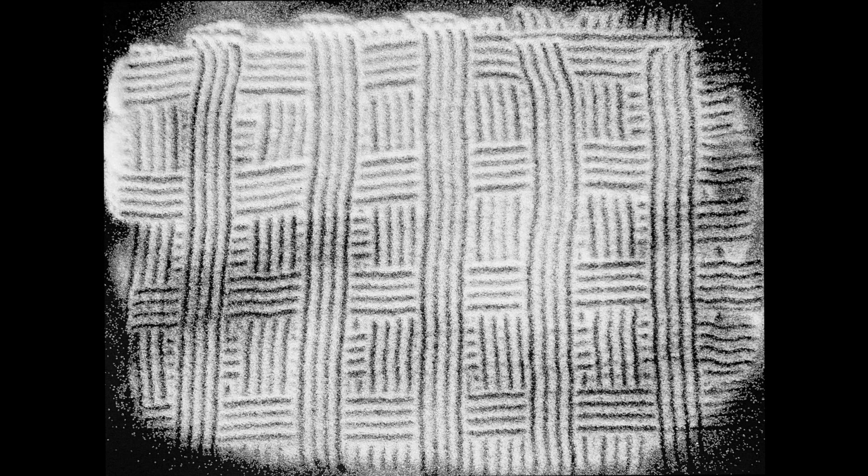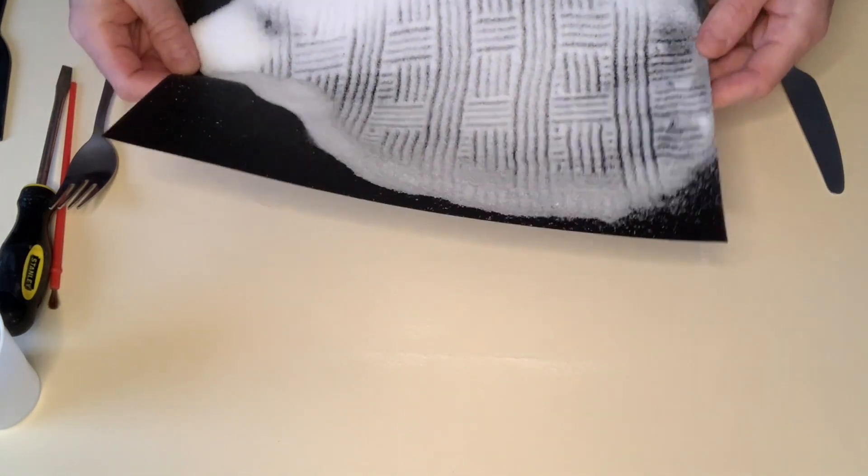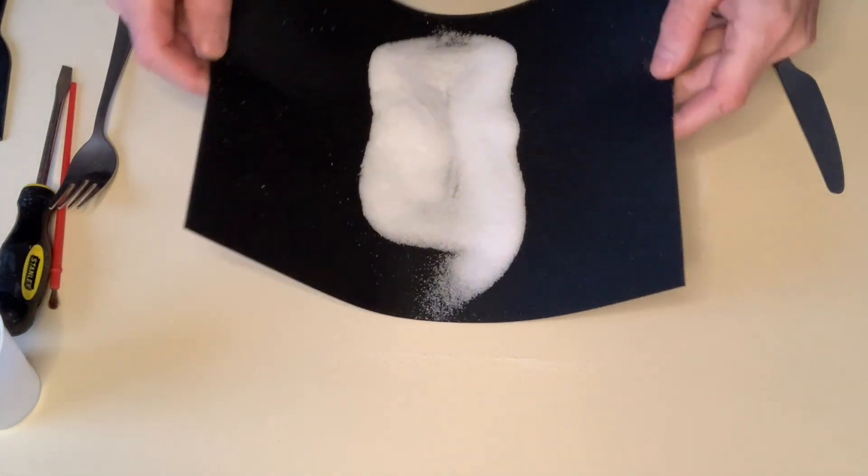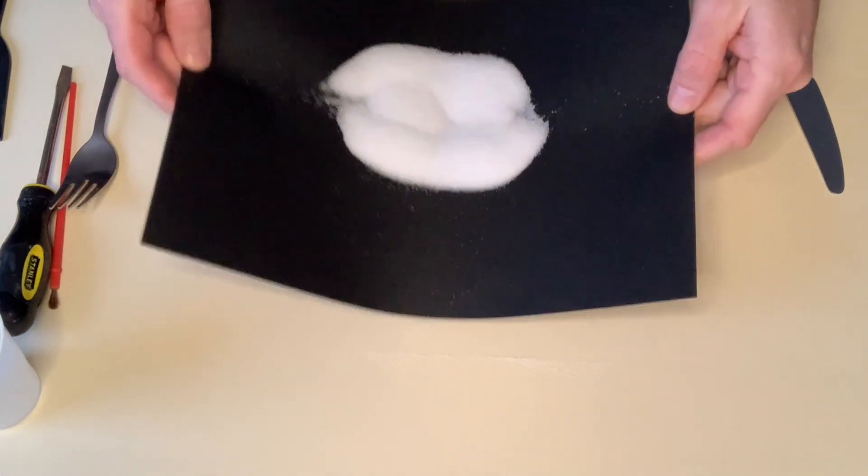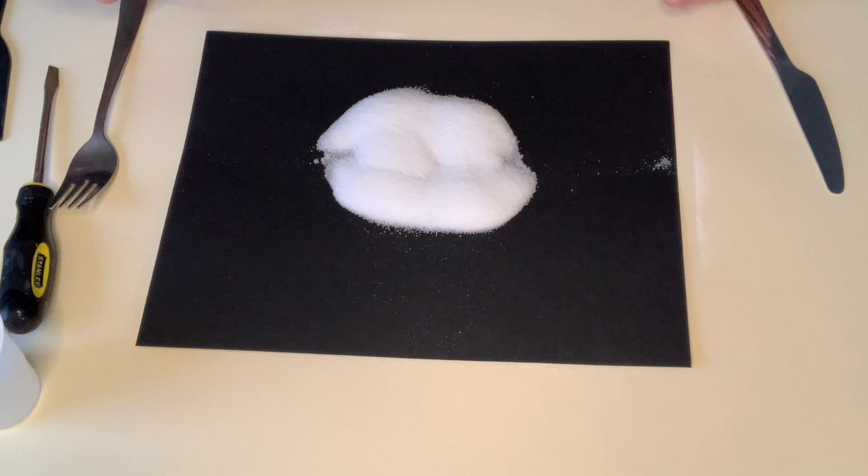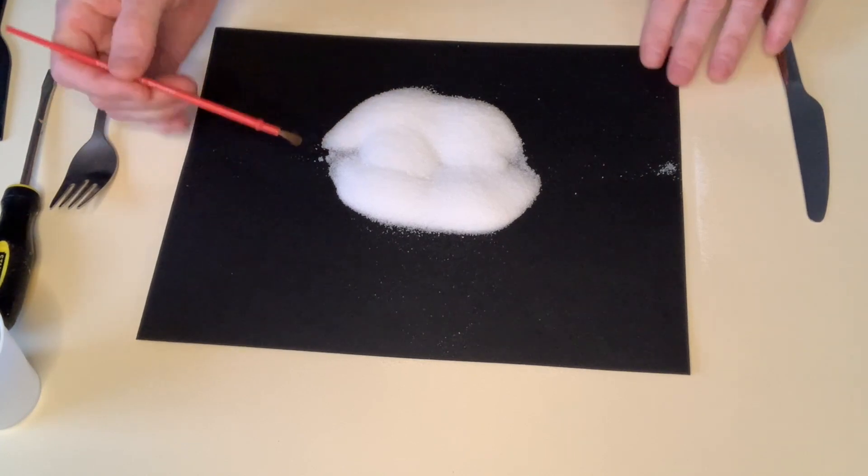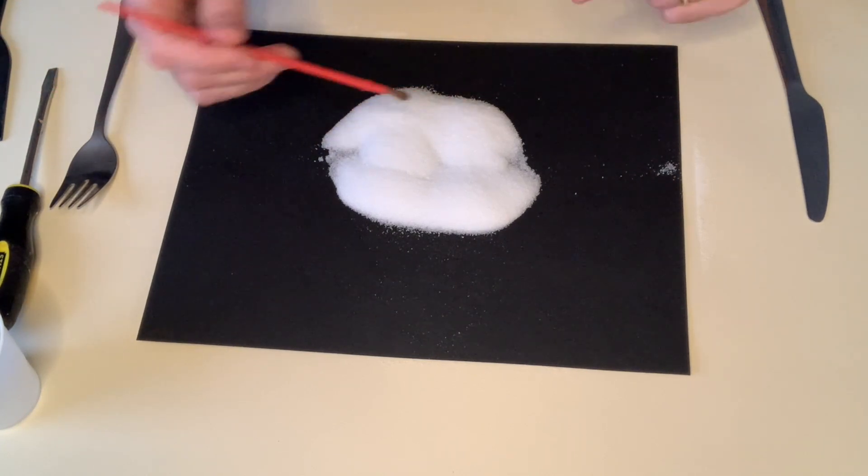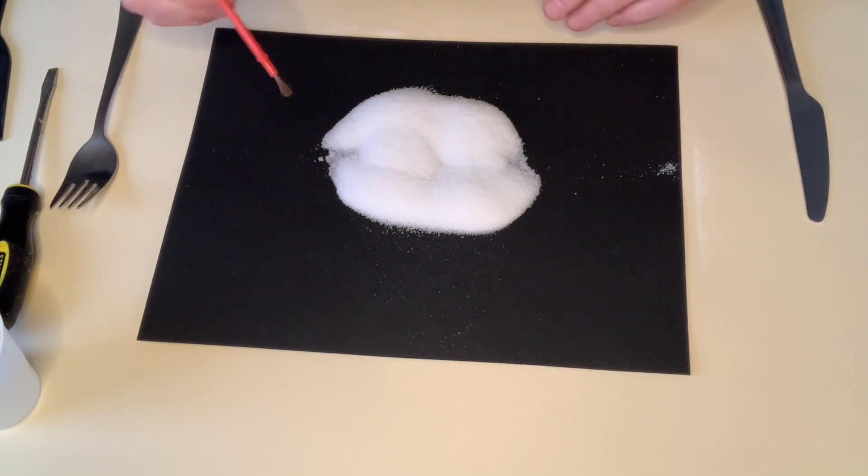Using the fork to go back and forth like that, I made a sort of a weaving using salt. What about the paintbrush? It's dry, so it won't get the salt wet. Of course, if I got the salt wet, it would change.